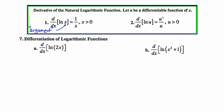In our first model problem, which illustrates what the rule is, our argument is x. That ends up in the denominator, and the derivative of x, of course, is 1, and that ends up in the numerator.